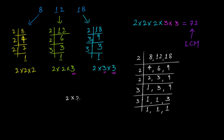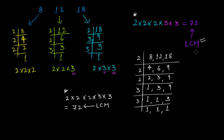Divide by 3 again: all become 1. So LCM = 2 × 2 × 2 × 3 × 3. Check Part 1 of the video series — you'll get the same result: 72. You can easily see that this combined prime factorization method is much easier and lets you calculate the LCM much faster.